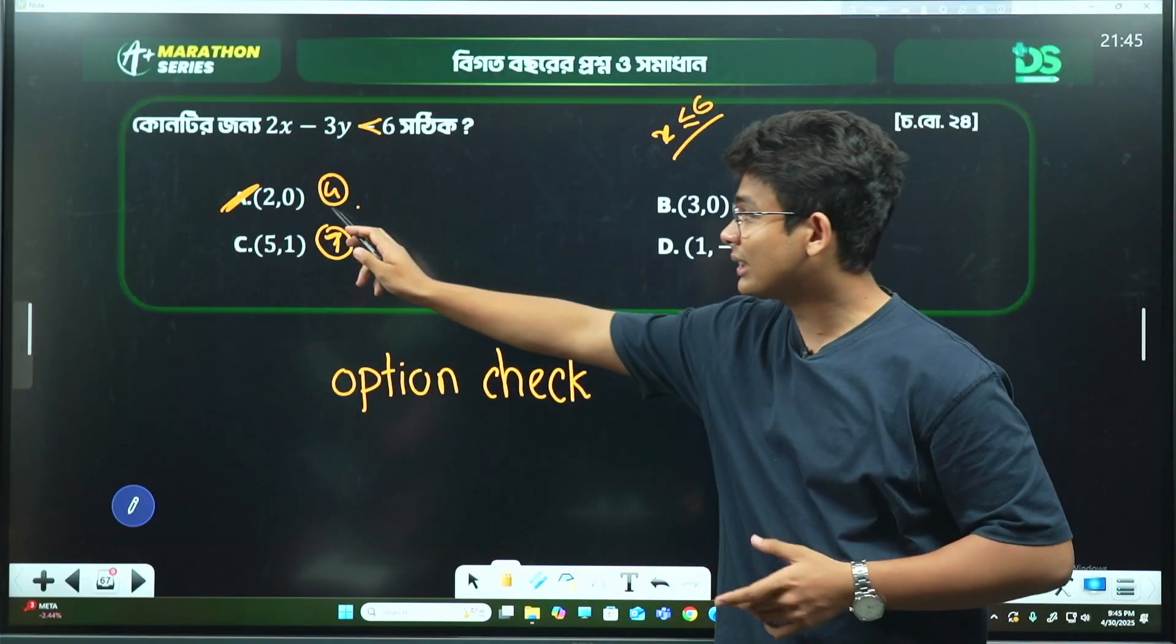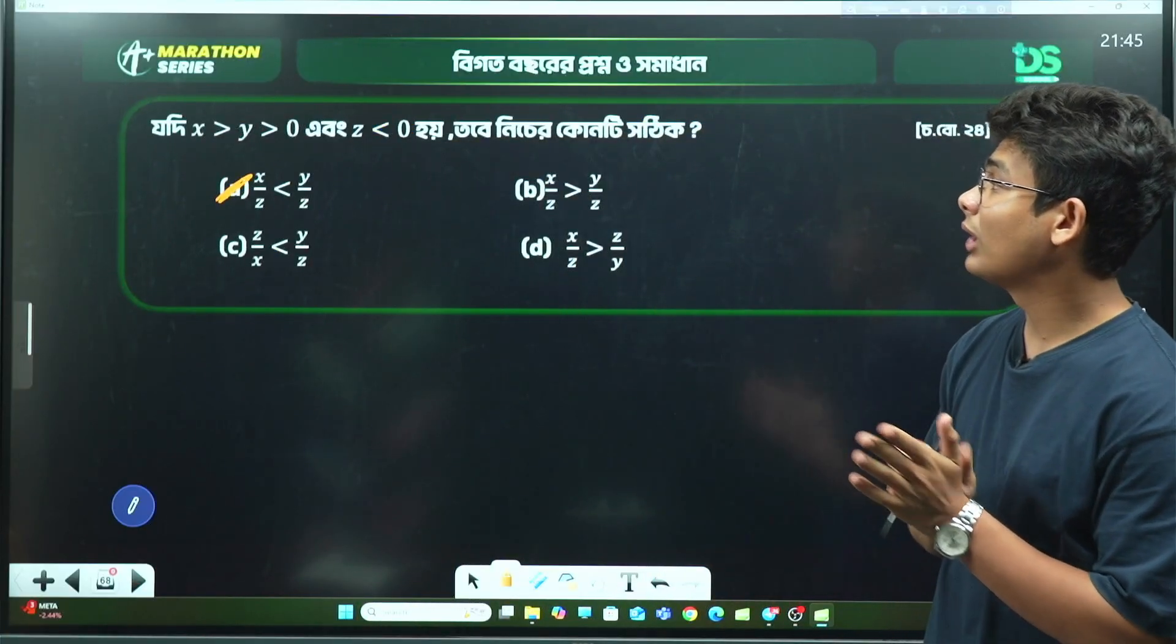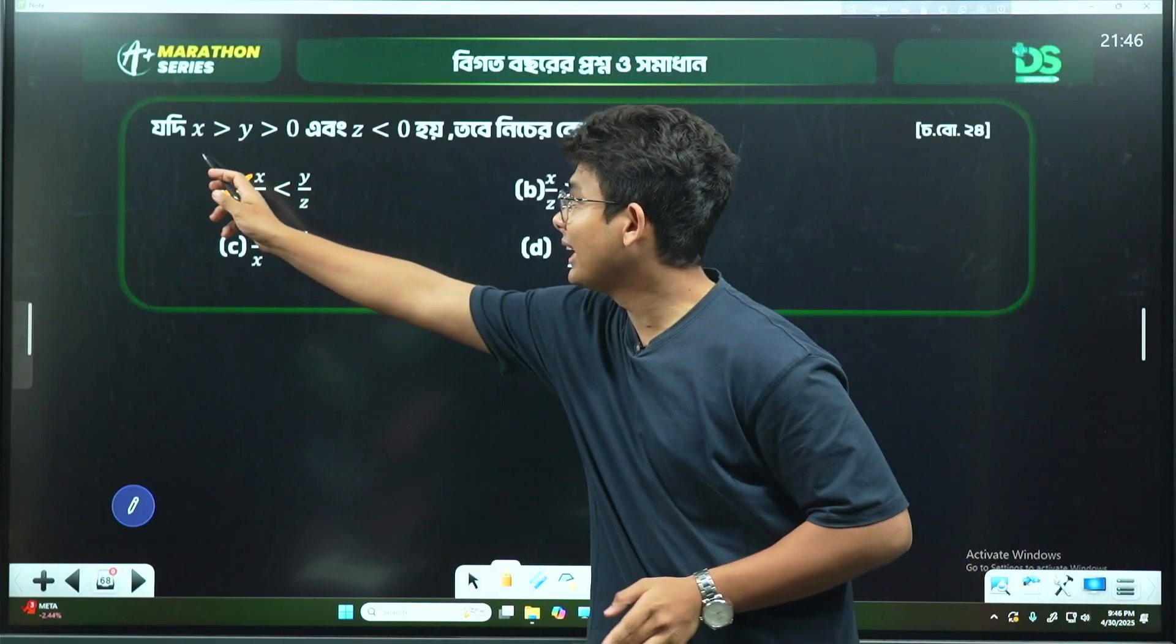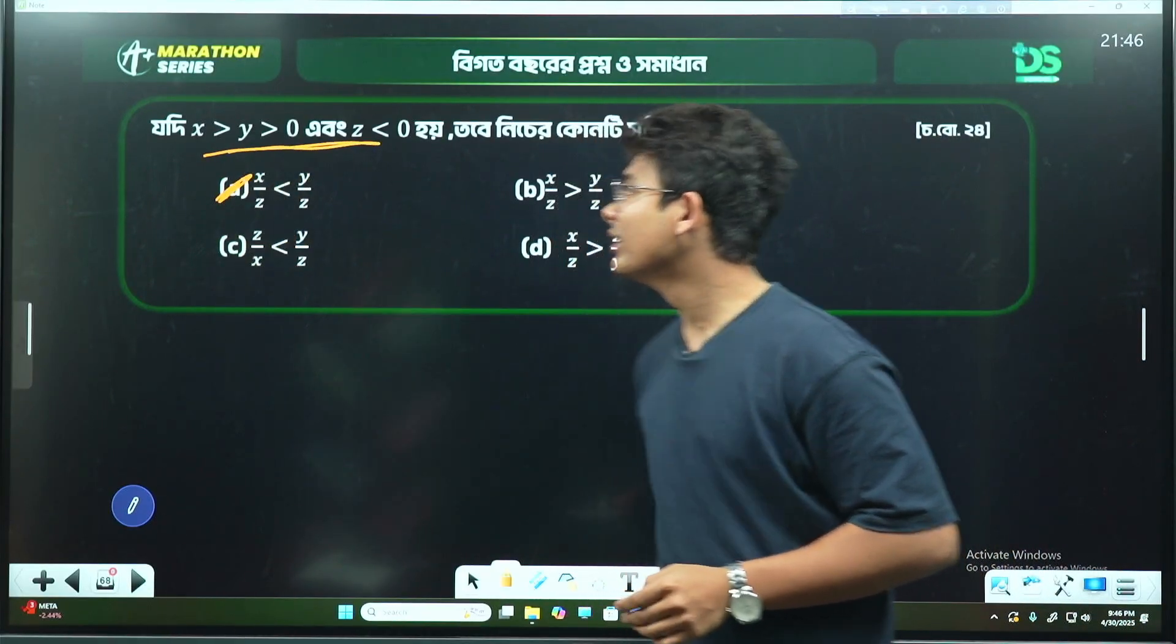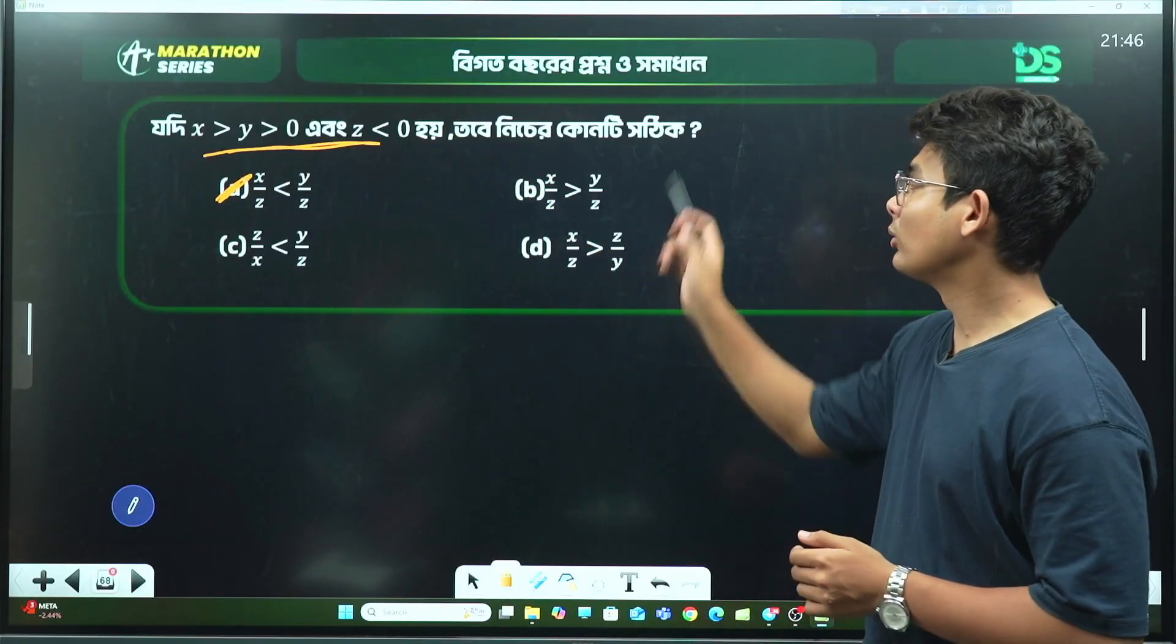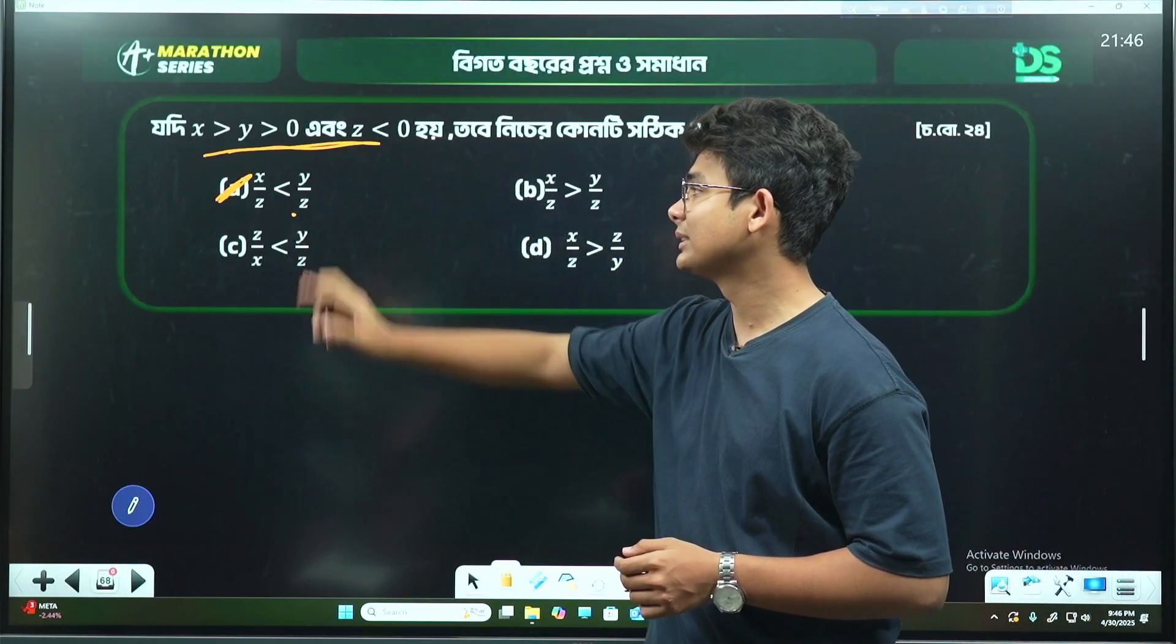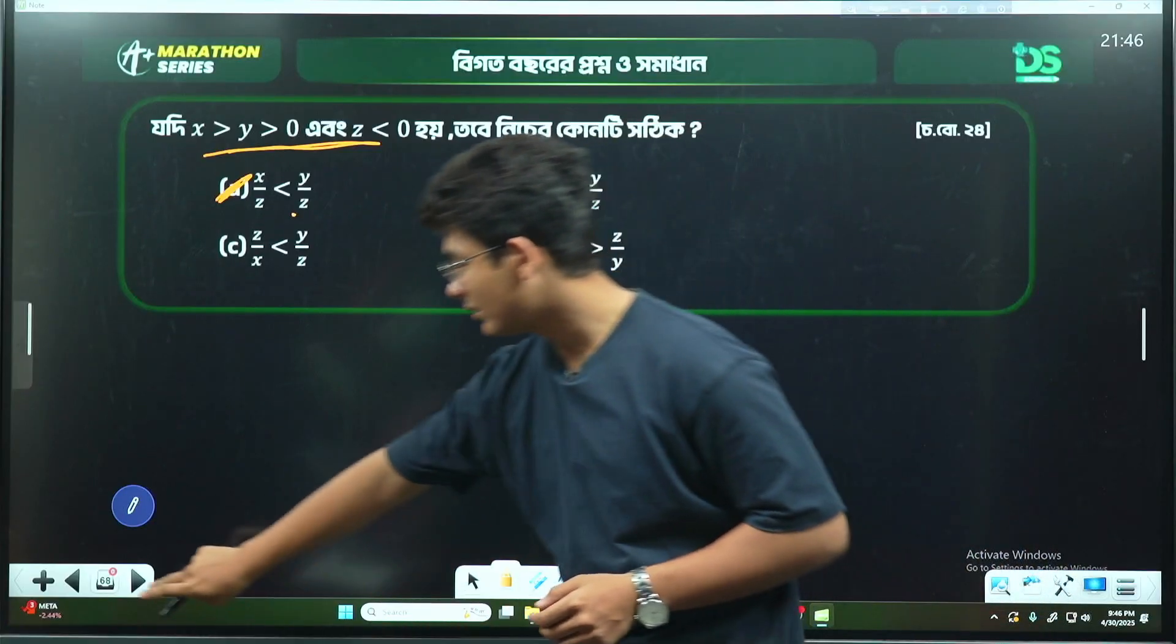Looking at the options: x > y > 0. Both are positive. When we compare x/z versus y/z, if the denominators are the same, then x/z is greater than y/z. So from the given conditions, we can determine the correct answer.